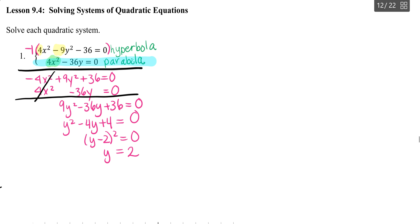So using that second equation there for the parabola, I plug in my y equals 2. And so I have 4x squared minus 36 times 2 equals 0.